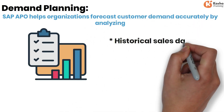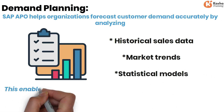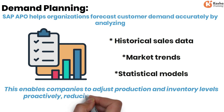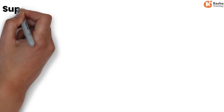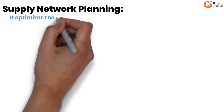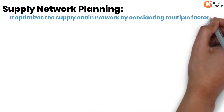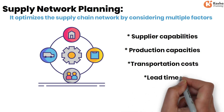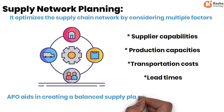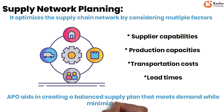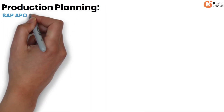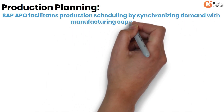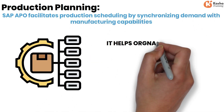This enables companies to adjust production and inventory levels proactively, reducing stock-outs and excess inventory. For supply network planning, SAP APO optimizes the supply chain network by considering multiple factors such as supplier capabilities, production capacities, transportation costs, and lead times. It aids in creating a balanced supply plan that meets demand while minimizing costs.